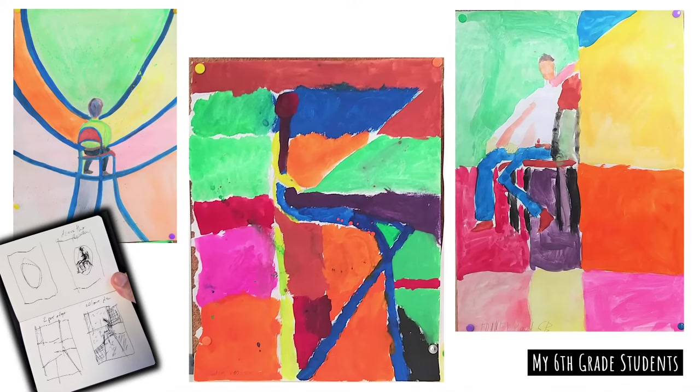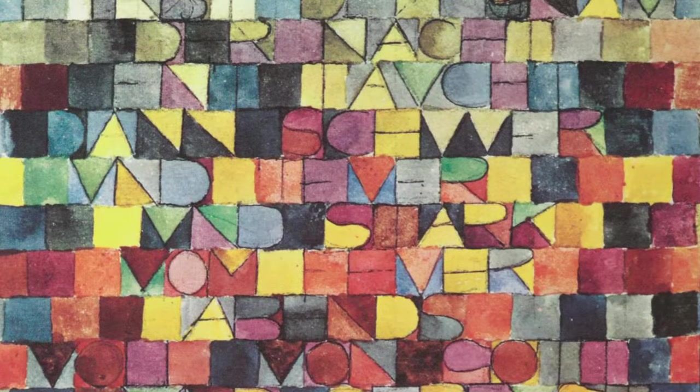My sixth grade students in these examples started with a line drawing of a figure seated on a chair, intentionally with lots of space around the figure. Then they searched for lines on the figure itself or on the chair that they could extend out to the edge of the picture. This created a web of connections between the figure and the edge before they added color. That approach is quite similar to the technique we can learn from today's artist, Paul Clay.